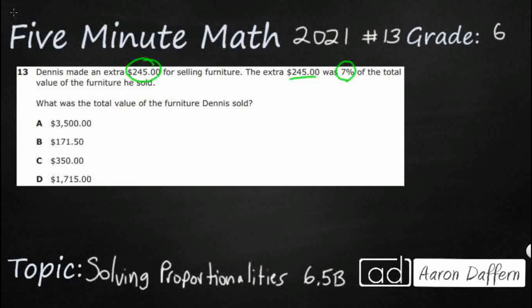So let's see how we can set this up. He made $245, and I'm going to say that that is related to 7%. So let's make a fraction here: $245 over 7%. In order to make this a proportionality, we need to have an equivalent fraction with the same terms in the same spot — dollars in the numerator and a percent in the denominator.